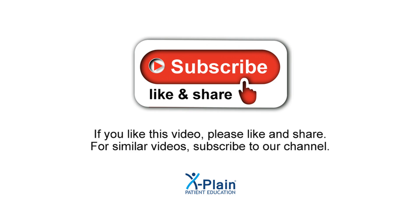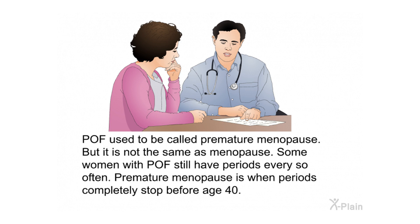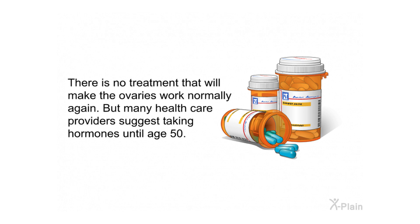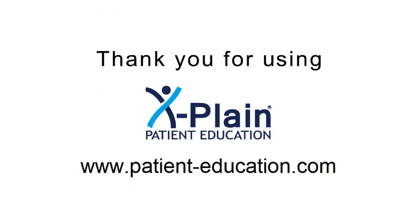In summary, premature ovarian failure, or POF, is when a woman's ovaries stop working before she is 40. Missed periods are usually the first sign, and later symptoms may resemble those of natural menopause. POF is not the same as premature menopause, which is when periods completely stop before age 40. There is no treatment to make the ovaries work normally again, but many health care providers suggest taking hormones until age 50. Most women with POF cannot get pregnant naturally, but fertility treatments can help.